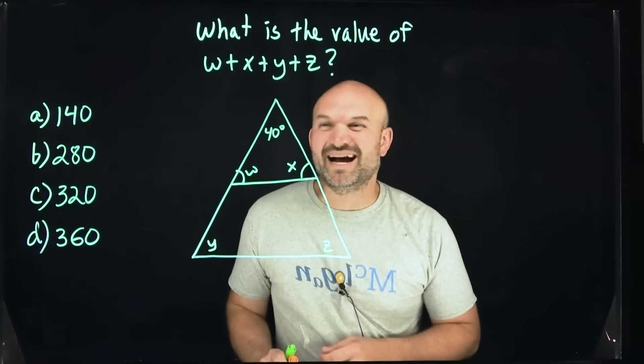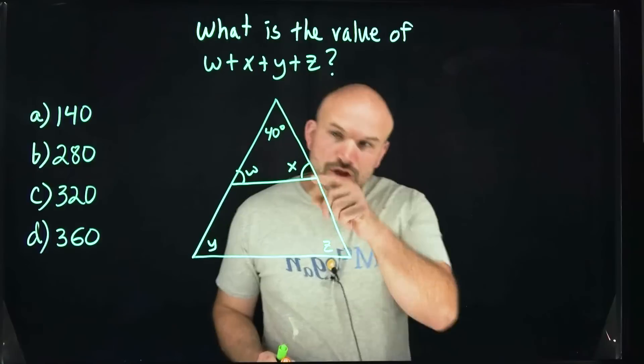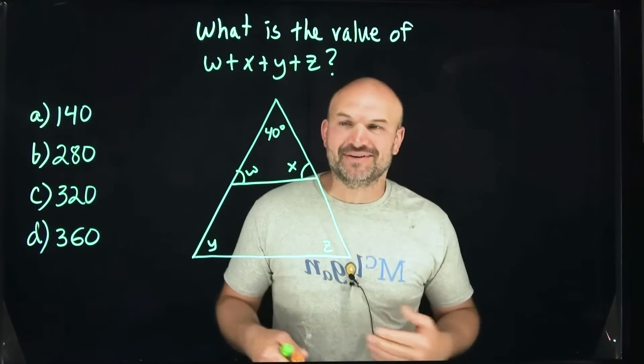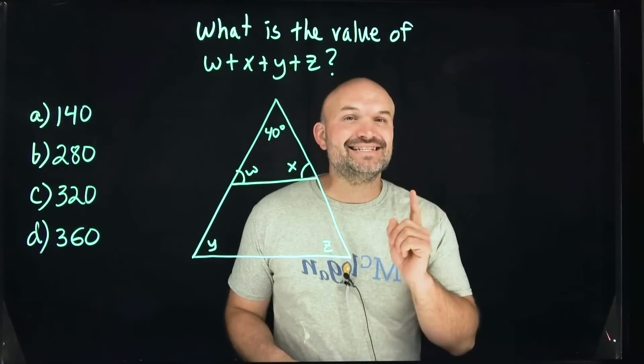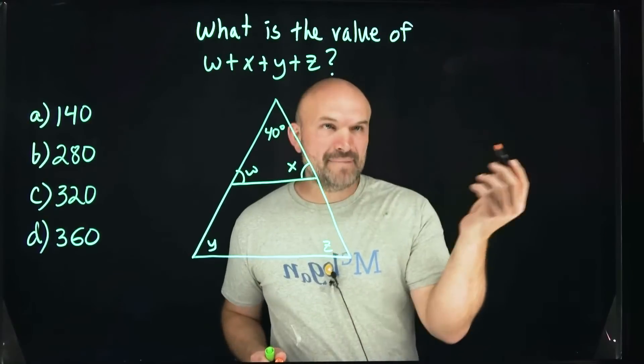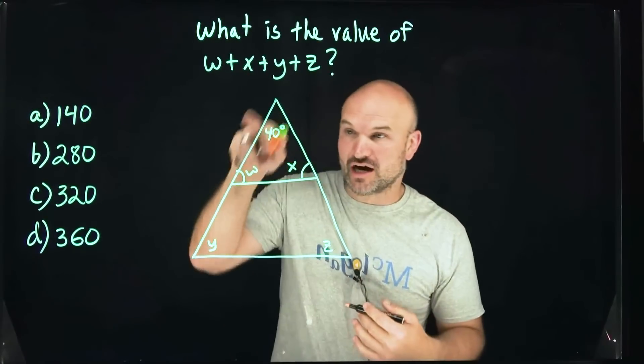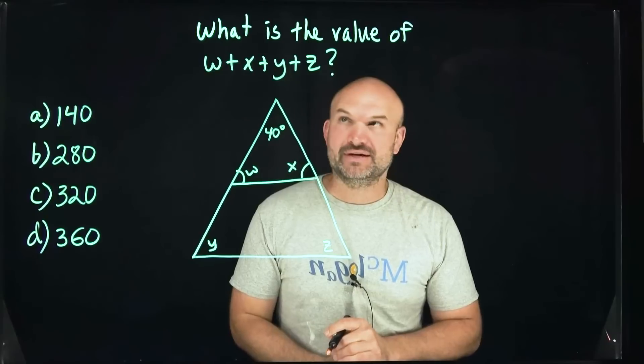To find the values of w, x, y, and z when given an included triangle of another triangle, there's one thing that we need to know. That is the interior angle sum theorem, basically saying that all the angles of a triangle is always going to add up to 180 degrees.